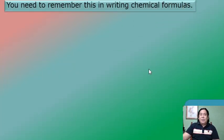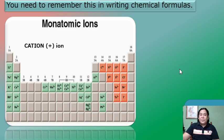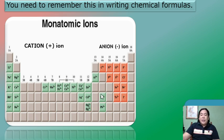What you need to remember in writing chemical formulas — I have here a portion of your periodic table. We have the cation and the anion. The cation is the positive ion while the anion is the negative ion. Based on the position of the elements in the periodic table, the elements belonging to the right side of this ladder are the non-metals, so they are the anions or elements with a negative charge. On the left side of the modern periodic table, all those elements are the metallic ions, which always bear a positive charge.